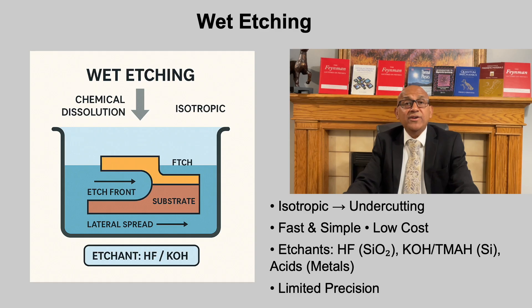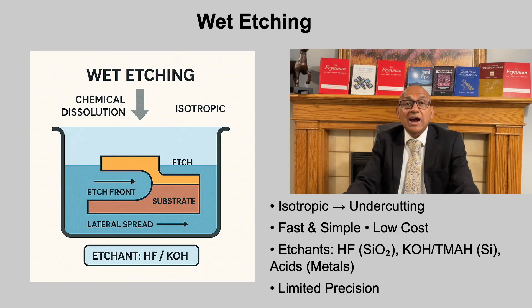In wet etching, the wafer is immersed in a liquid chemical etchant that reacts with the exposed material to dissolve it into solution. Because the reaction proceeds equally in all directions, the resulting profile is rounded and may undercut the resist. Wet etching is simple, inexpensive and offers high removal rates, useful for many macro or microscale steps. Common examples include hydrofluoric acid for SiO₂, KOH or TMAH for silicon, and acid mixtures such as nitric acid or aqua regia for metals. Its limitations are poor directionality and limited control, making it unsuitable for features that require sharp vertical edges.